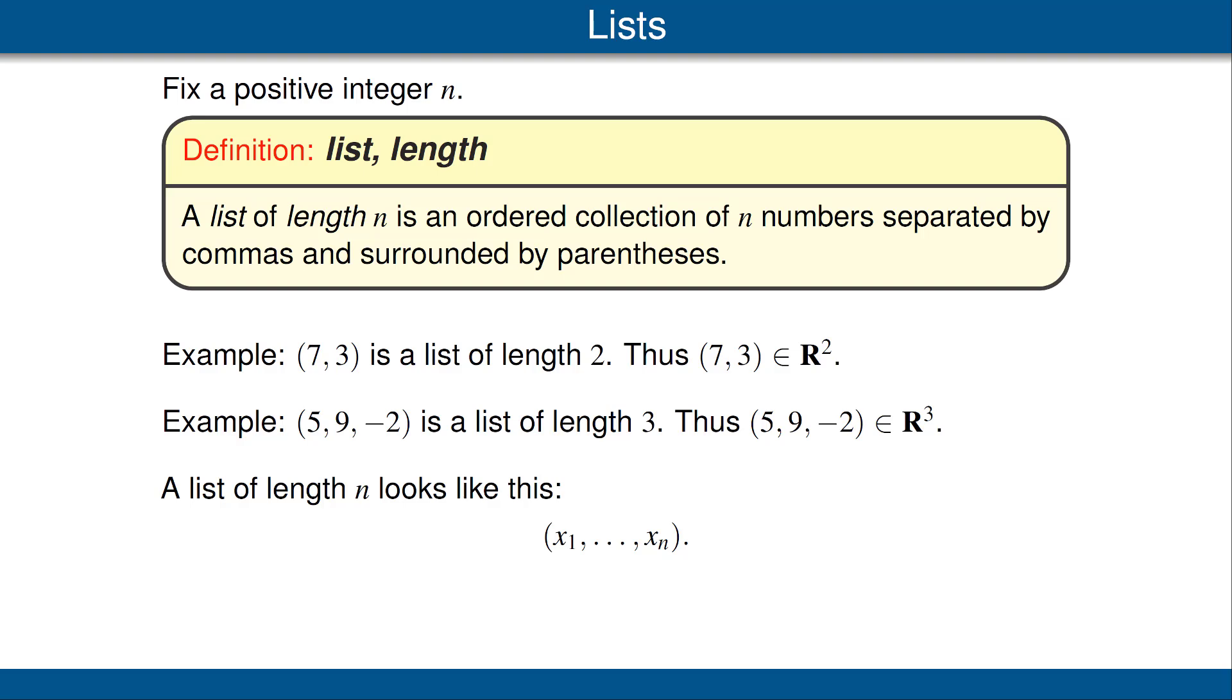A list of length n looks like this, where each x_j is a real or complex number. Two lists are equal if and only if they have the same length and the same elements in the same order.